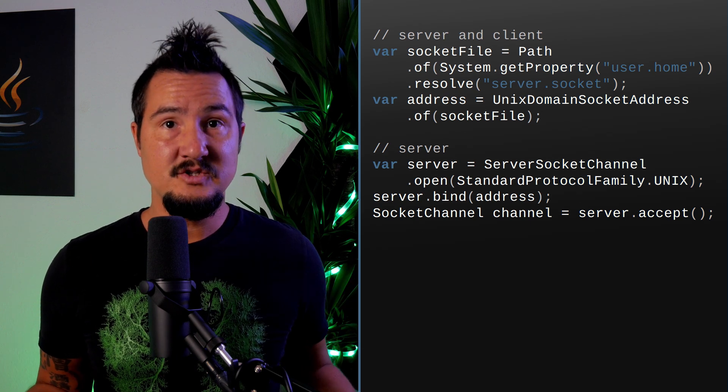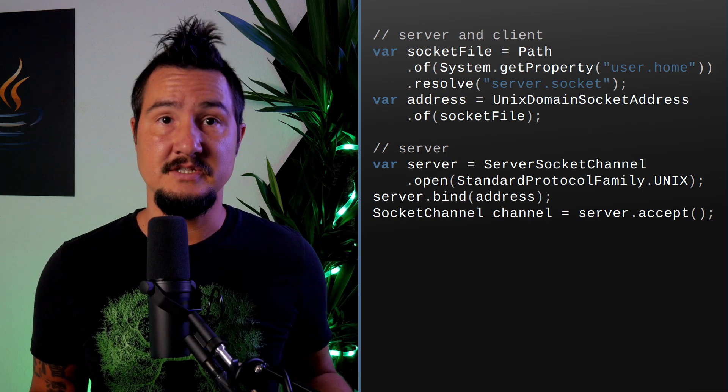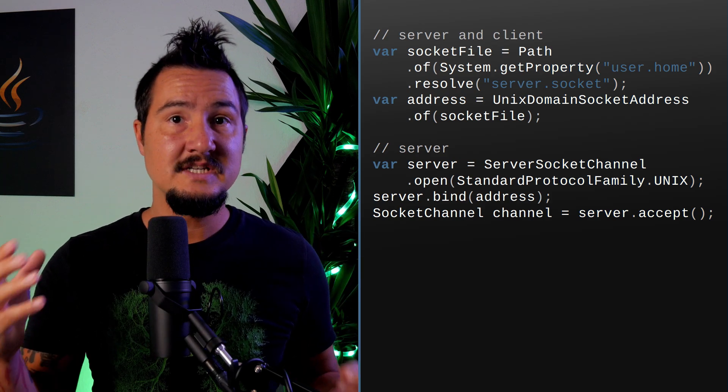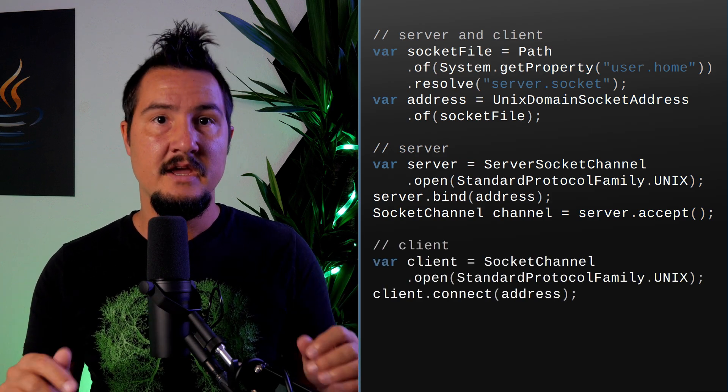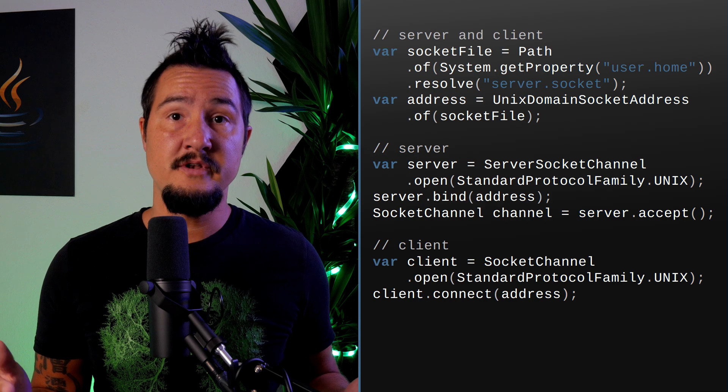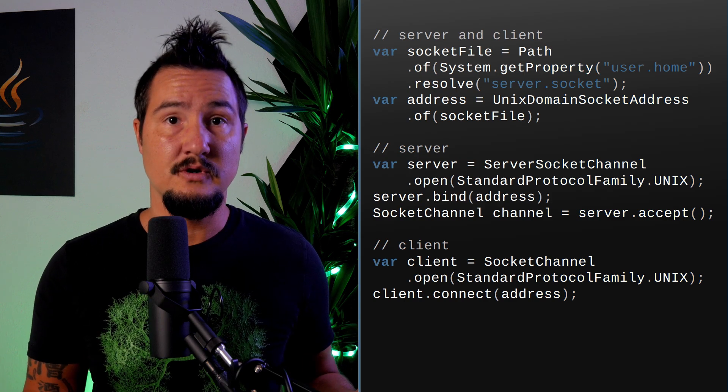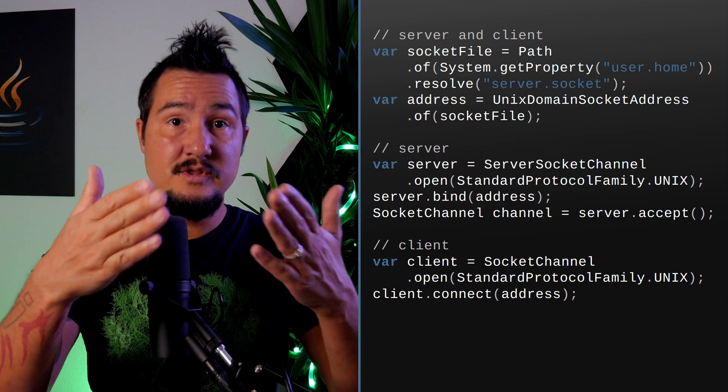Then we can bind the server channel to the address and start accepting incoming messages. On the client, we need a socket channel — note, not a server socket channel, just socket channel. It also has a static factory method open that we pass the same UNIX protocol enum to. Then we connect it to the address. The two classes, SocketChannel and ServerSocketChannel, have existed since Java 4, and message passing across UNIX domain sockets works exactly the same as with TCP/IP.